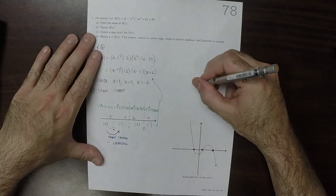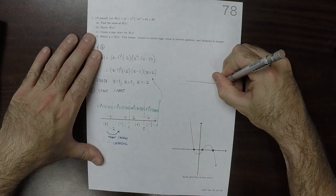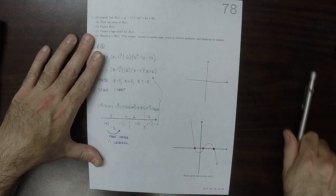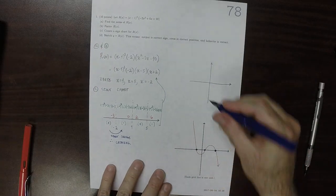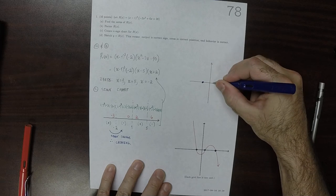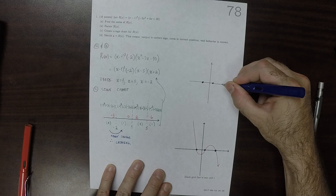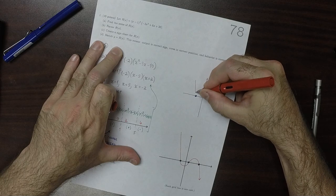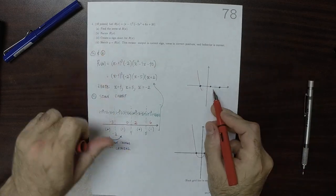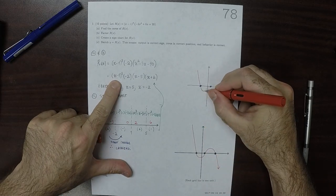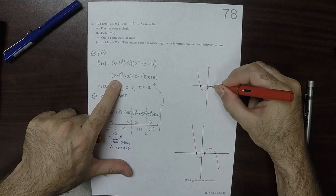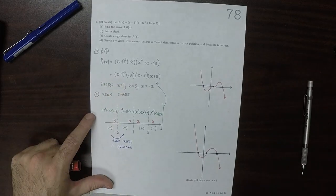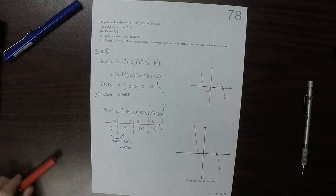But if you were to carefully plot that graph, then that zero at one would actually look a little bit different. It would end up looking like this. So this is a degree one crossing, but at one, that's a degree three crossing, so it's going to end up looking like this. Okay, that's the answer.